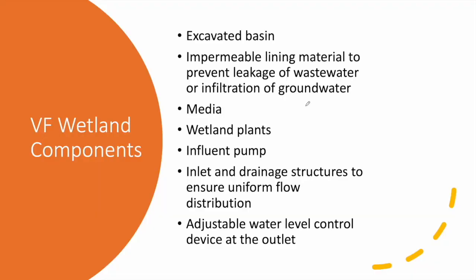Now let's look at the components of a vertical flow wetland. First, we excavate a basin with a bottom slope to enable wastewater drainage by gravity. We then include an impermeable lining material across the entire wetland, up to soil level, to prevent any wastewater leakage into the groundwater and avoid any source of pollution, since this wastewater is still untreated.